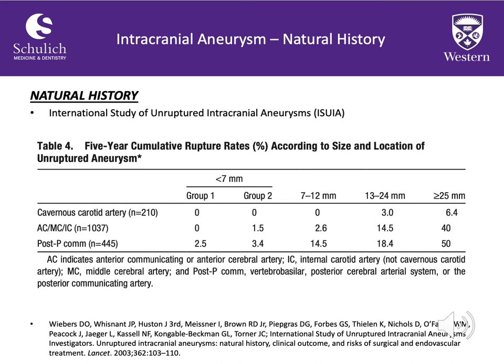Looking beyond the 7 mm mark, rupture risks were increasingly higher with larger aneurysm size. However, the association between previous subarachnoid hemorrhage and no subarachnoid hemorrhage was lost after the 7 mm mark. So prior history of subarachnoid hemorrhage appears primarily more important in smaller aneurysms less than 7 mm, compared to the larger aneurysm group where increasing size becomes the primary predictor of rupture.